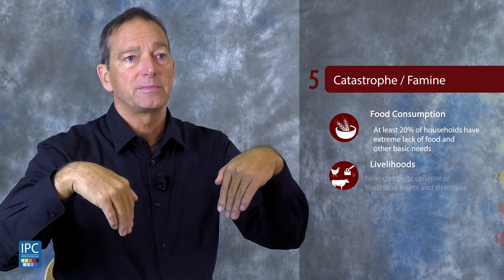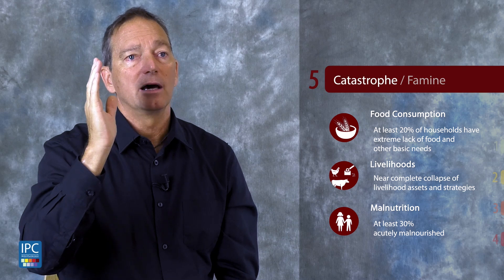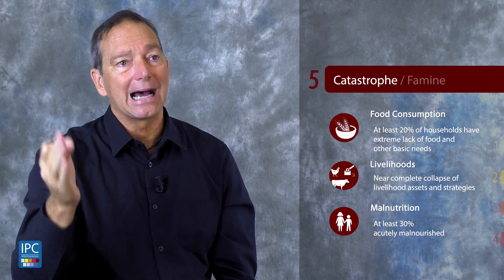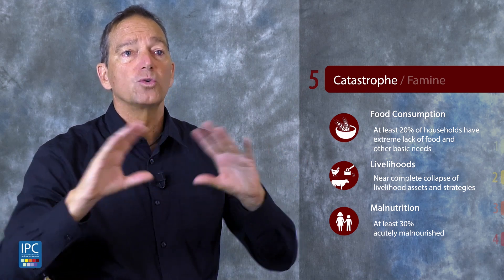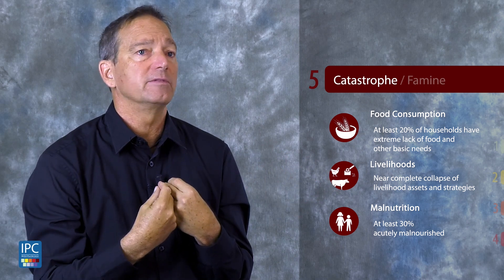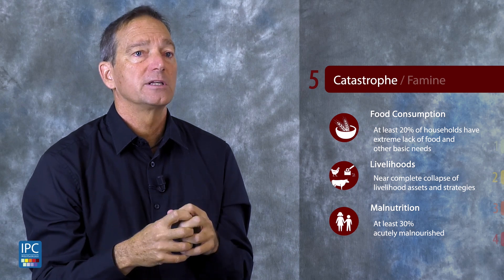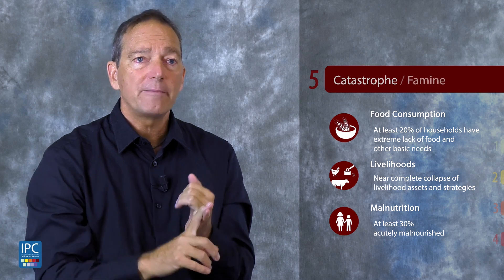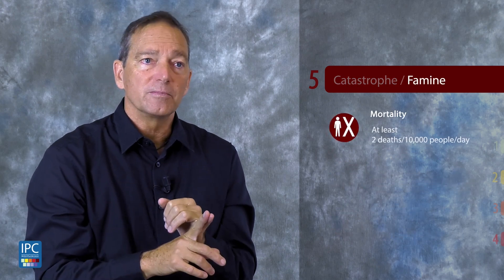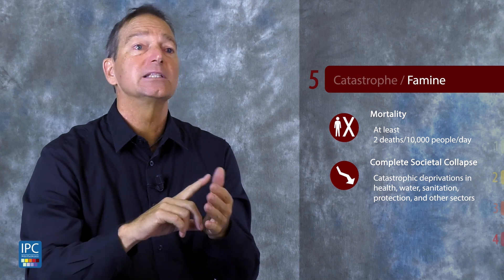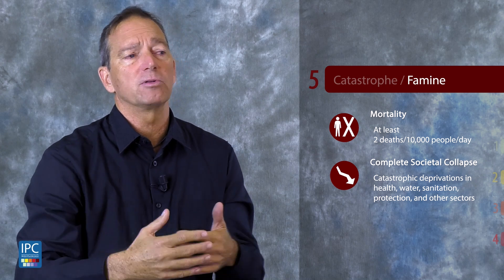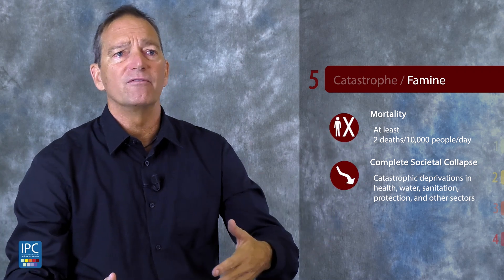Phase five is famine or catastrophe — when the entire system has collapsed. Mortality rates are elevated above two per 10,000 people dying per day, malnutrition rates are above 30% global acute malnutrition, and over 20% of the population in a given area are unable to eat enough food to sustain themselves. When famine is happening it's not just a food issue — the whole society is collapsing. It's a health issue, a water issue, a sanitation issue, and a protection issue, because people are highly vulnerable to exploitation and violence of all kinds.